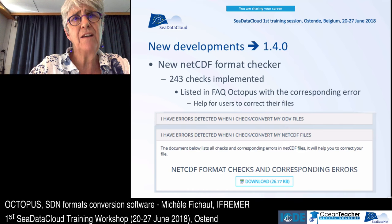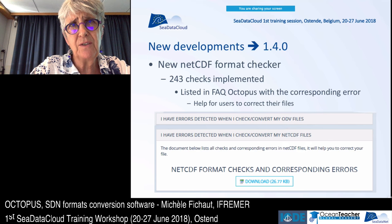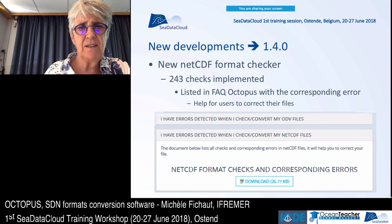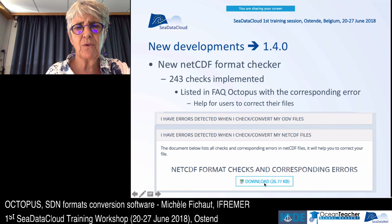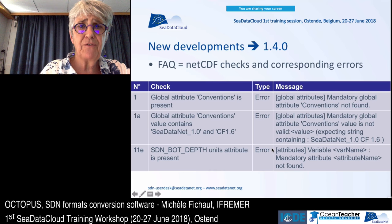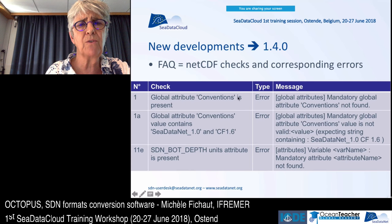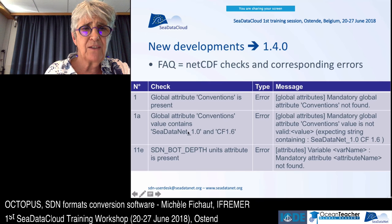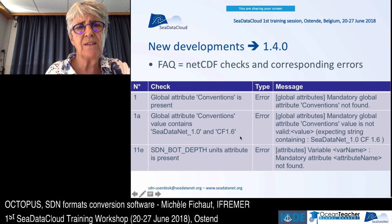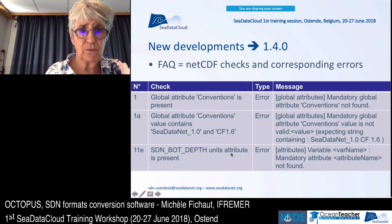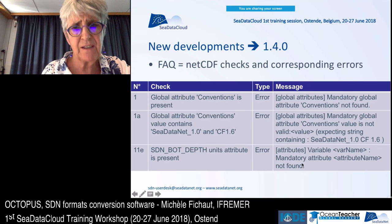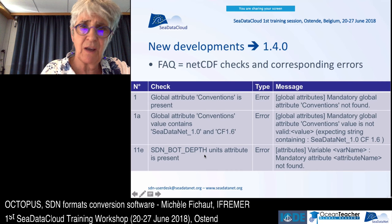For the NetCDF format checker, we have implemented more than 240 checks, all listed in the FAQ. There is an Excel file with descriptions of each test and corresponding errors. For example, Octopus checks that the global attribute conventions is present in the NetCDF file and that its value is correct. It also verifies that the unit attribute for the SDN bottom depth field is present. There are many checks like that.